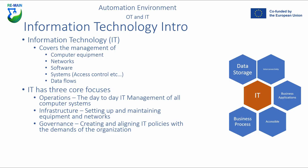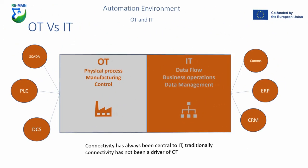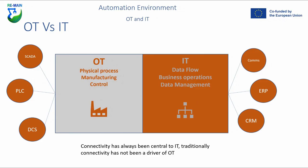IT is more focused on business process, where operational technology is more focused on manufacturing process. This diagram represents where OT and IT differentiate. Connectivity is central to IT, where traditionally it is not a primary driver of OT — OT is more focused on control and monitoring of manufacturing processes. IT focuses on data flows, business operations, and data management. There is a hard line separating the two, though even within Industry 3.0 there is some overlap between OT and IT.